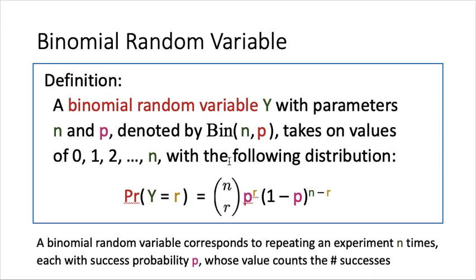What is the natural meaning of this? A binomial random variable corresponds to repeating a certain experiment n times, where n is one of the parameters and must be a positive integer. For each experiment, the success probability is p, where p is a value between 0 and 1. The value of this random variable counts the number of successes.